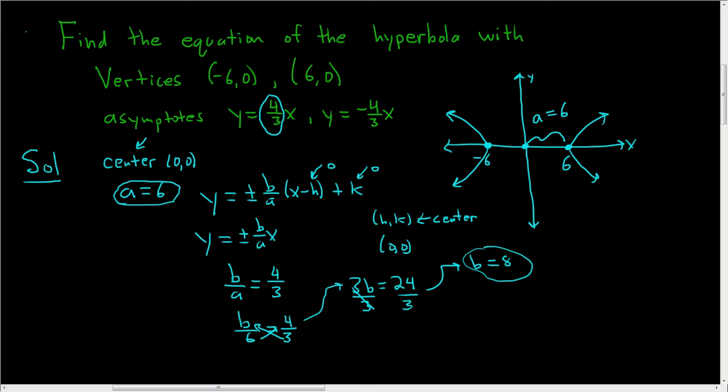So for a hyperbola that opens left and right, the general formula is x minus h quantity squared over a squared minus y minus k quantity squared over b squared and this is equal to 1. In this problem, the center is 0, 0, so both h and k are 0.